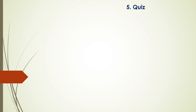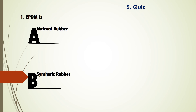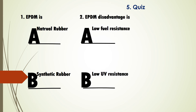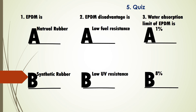Let's have a small quiz on EPDM rubber. First question: EPDM is — option A, natural rubber, or option B, synthetic rubber? Second question: EPDM's major disadvantage is — option A, low fuel resistance, or option B, low UV resistance? Third question: the water absorption limit of EPDM rubber is — option A, one percentage, or option B, eight percentage? Share your answers in the comment section.